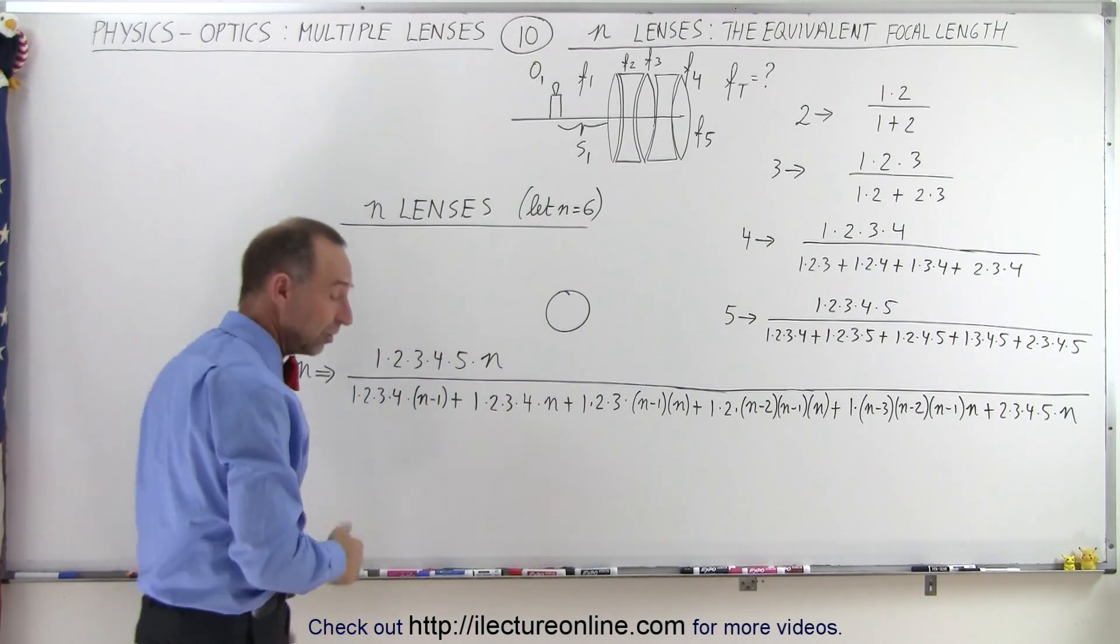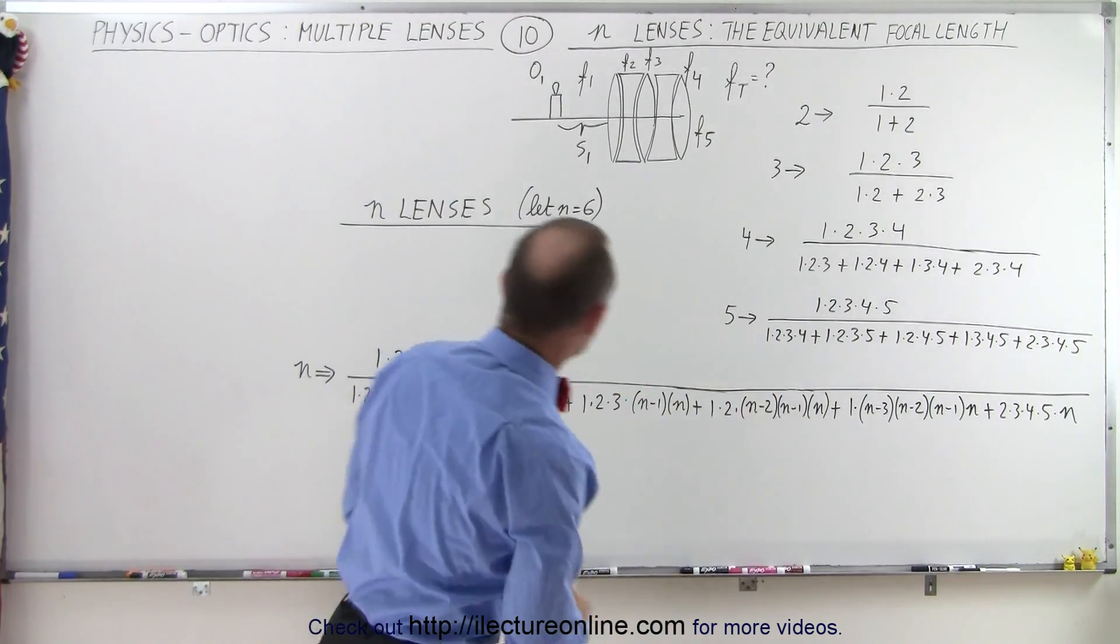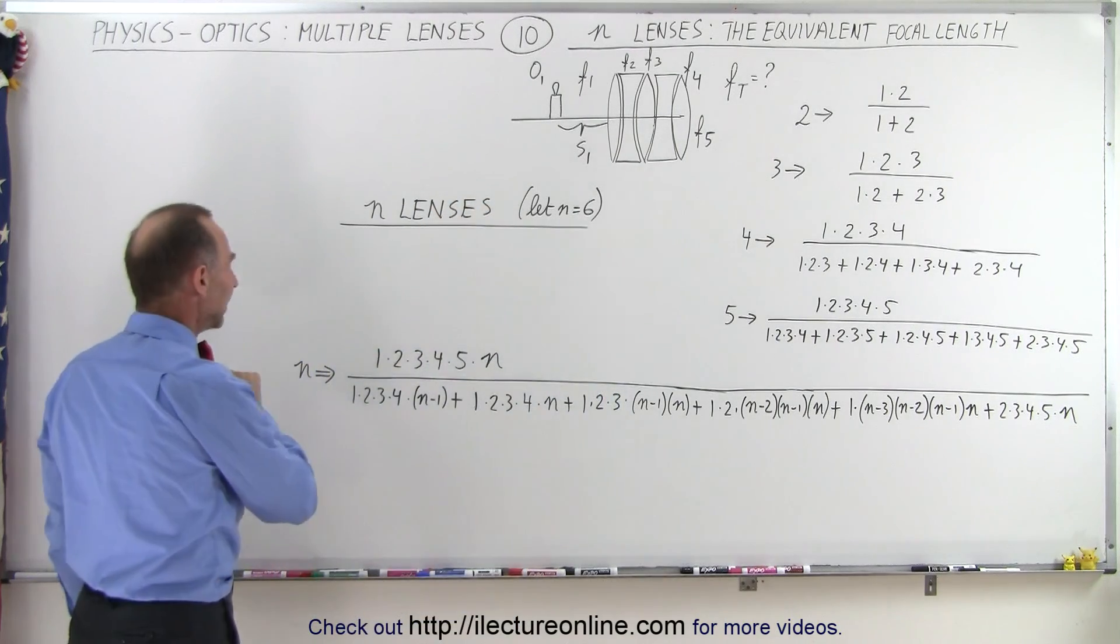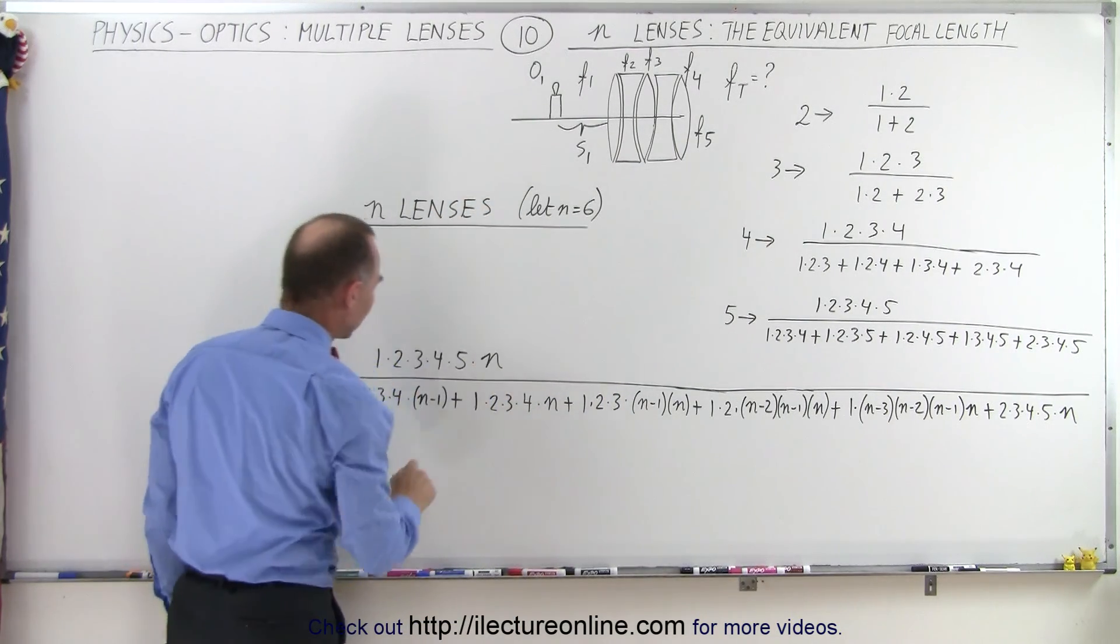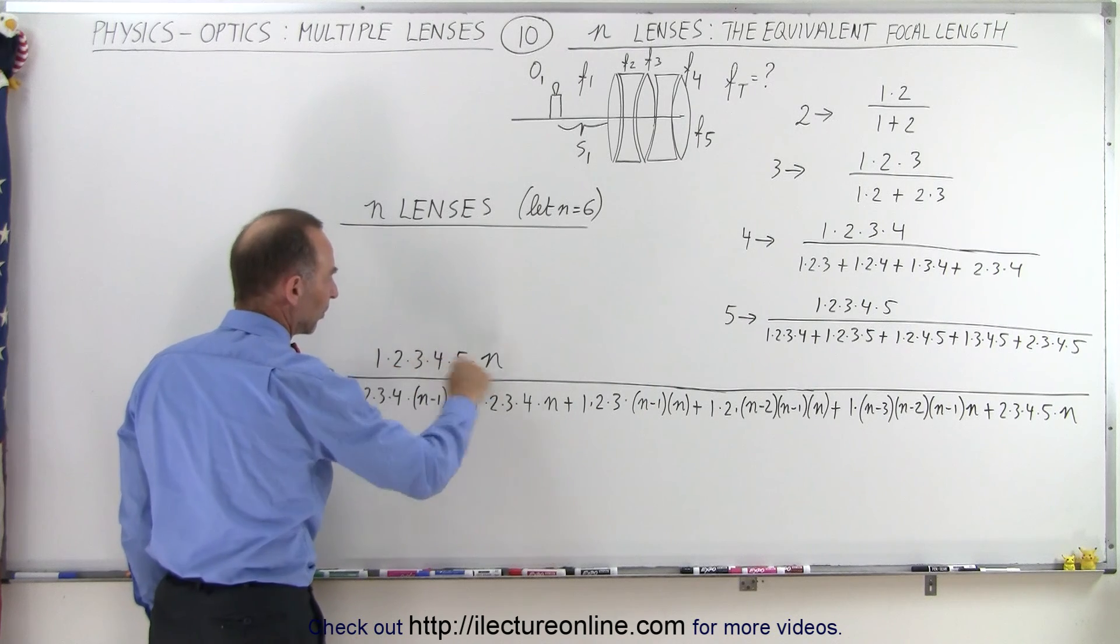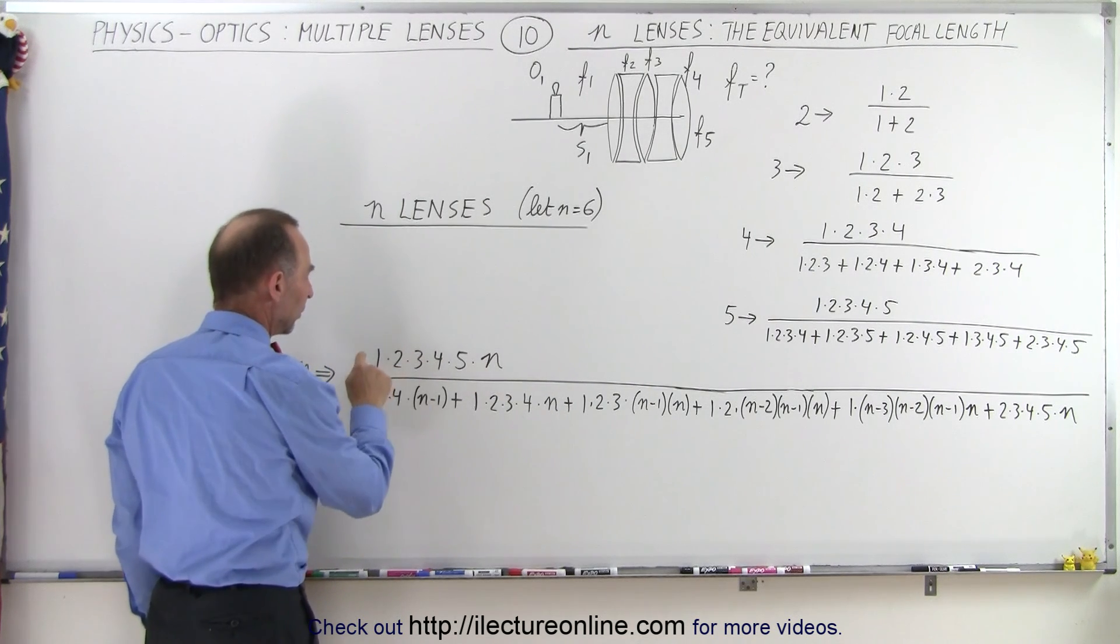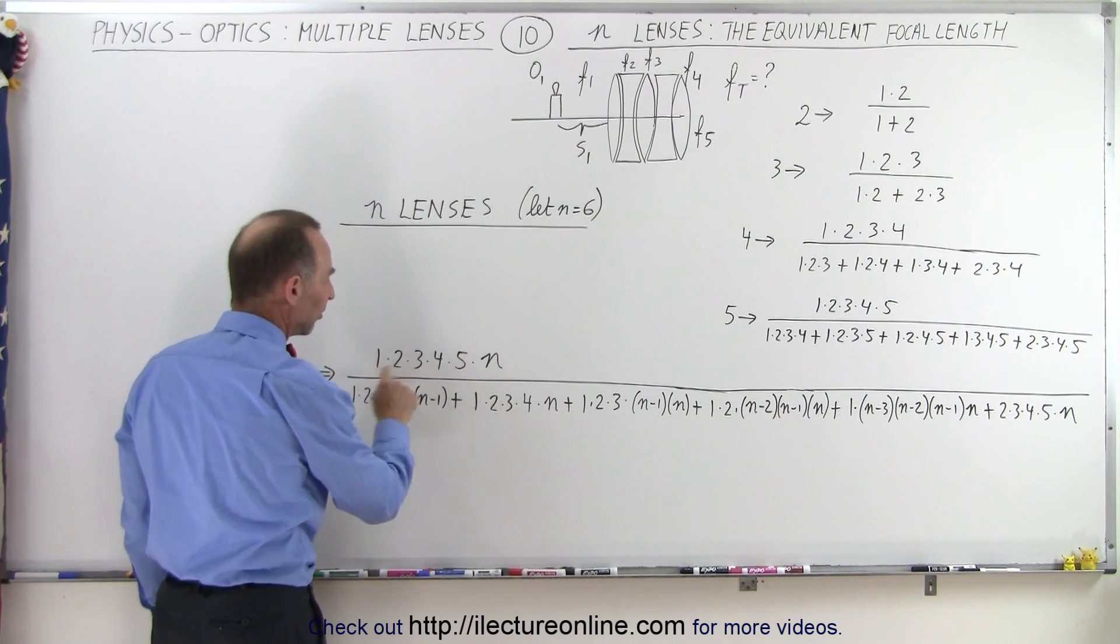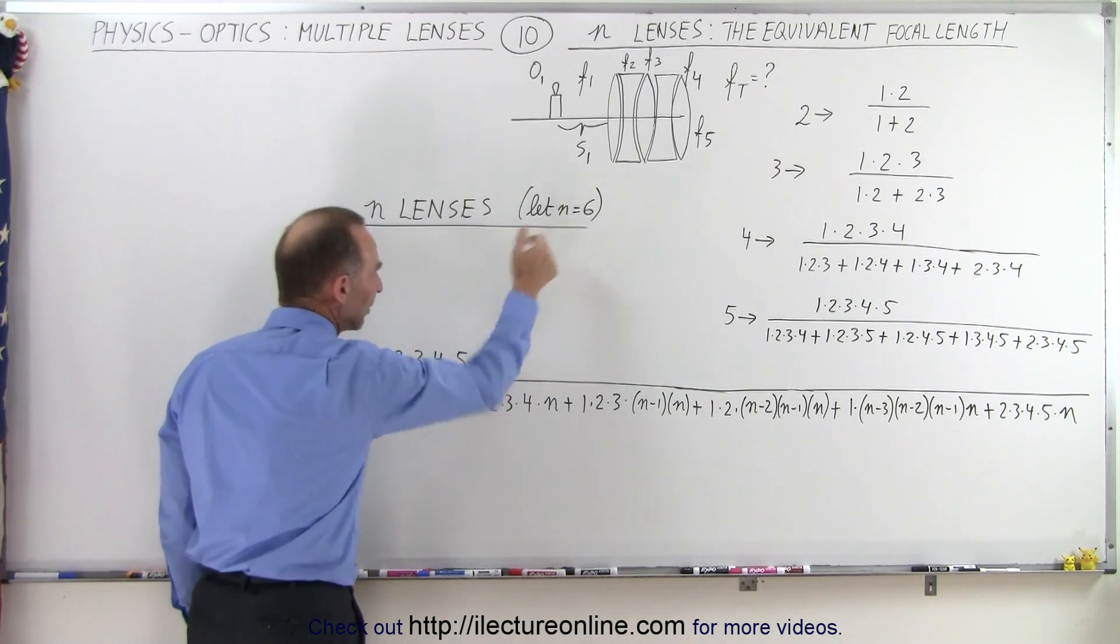And so for n lenses, and oh, here's a little circle then. Let n in this case equal six. You'll have six numbers in the numerator representing the focal length of all six lenses. The last one will be n, n being the sixth one.